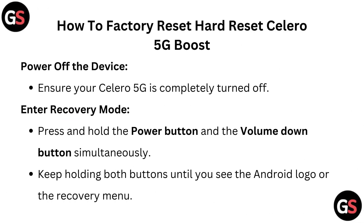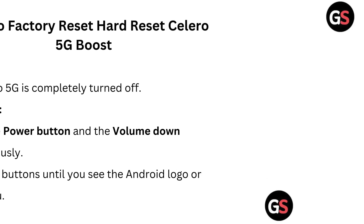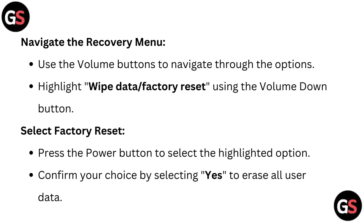Power off the device. Ensure your Celero 5G is completely turned off. Enter recovery mode. Press and hold the power button and the volume down button simultaneously. Keep holding both buttons until you see the Android logo or the recovery menu.